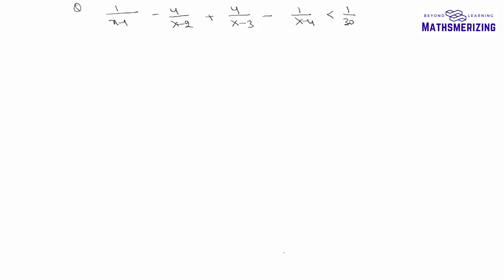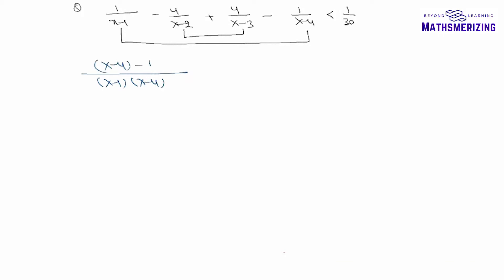When I see this expression it looks a little complicated, but what I can do is take these two together. When I multiply them I'll get x² - 5x, and when I multiply these two also I'll get x² - 5x. So I'll take these two together and write it as (x-1)(x-4), and it will be (x-4) - (x-1). Then here I'll take 4 common and write (x-2)(x-3), then minus (x-3) and plus (x-2).